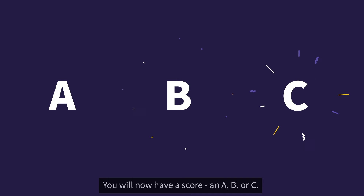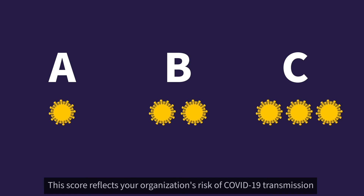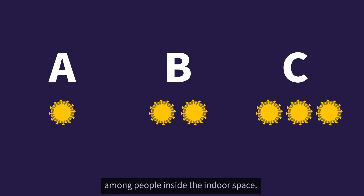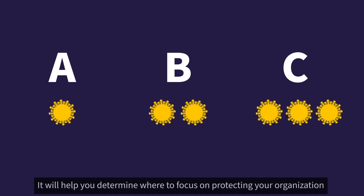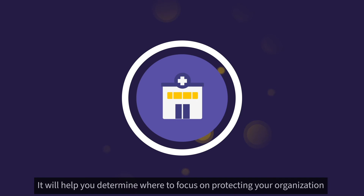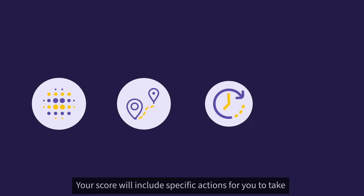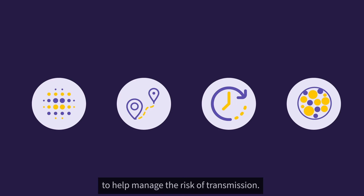You will now have a score — an A, B, or C. This score reflects your organization's risk of COVID-19 transmission among people inside the indoor space. It will help you determine where to focus on protecting your organization and your community from airborne diseases like COVID-19. Your score will include specific actions for you to take to help manage the risk of transmission.